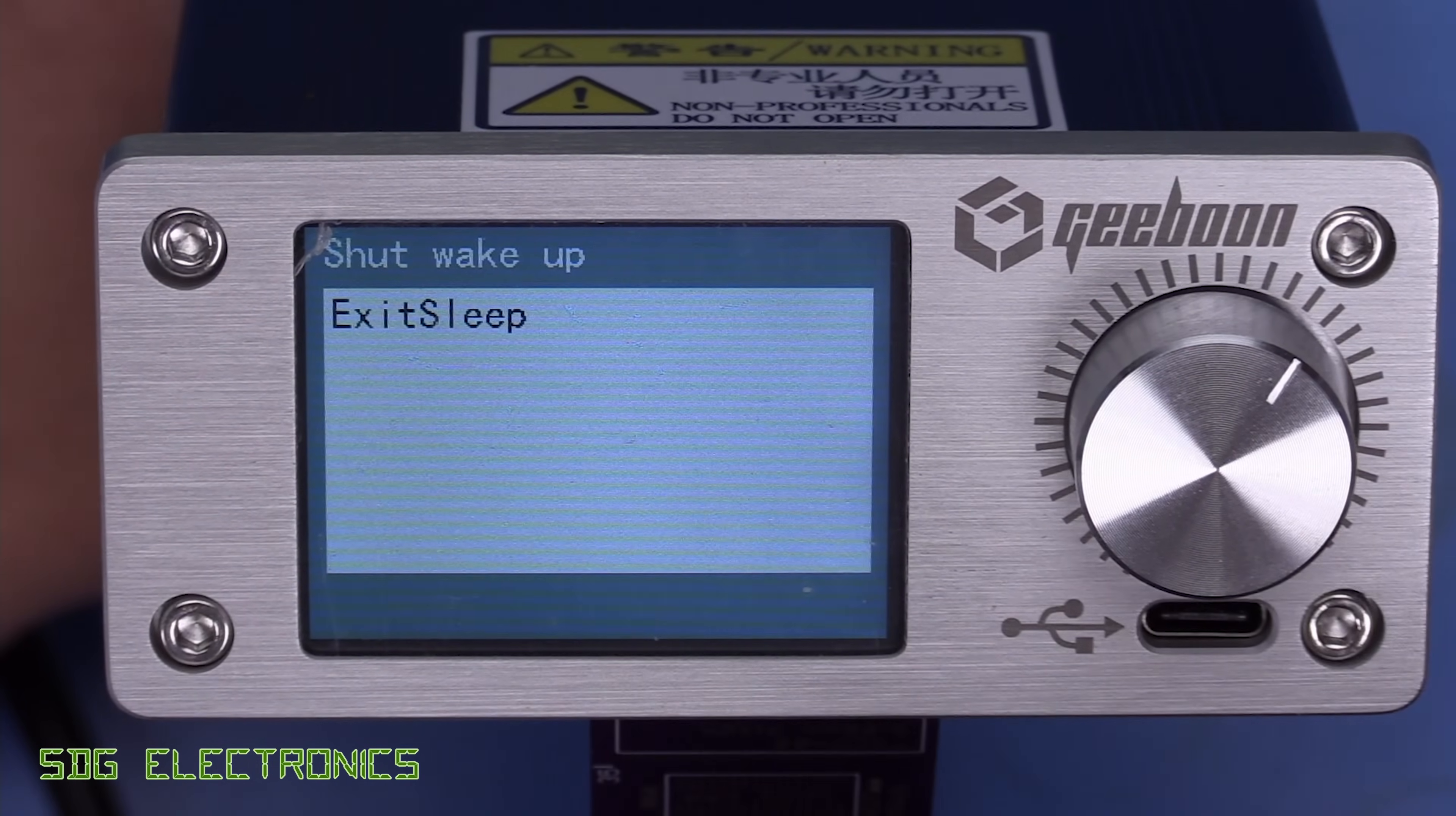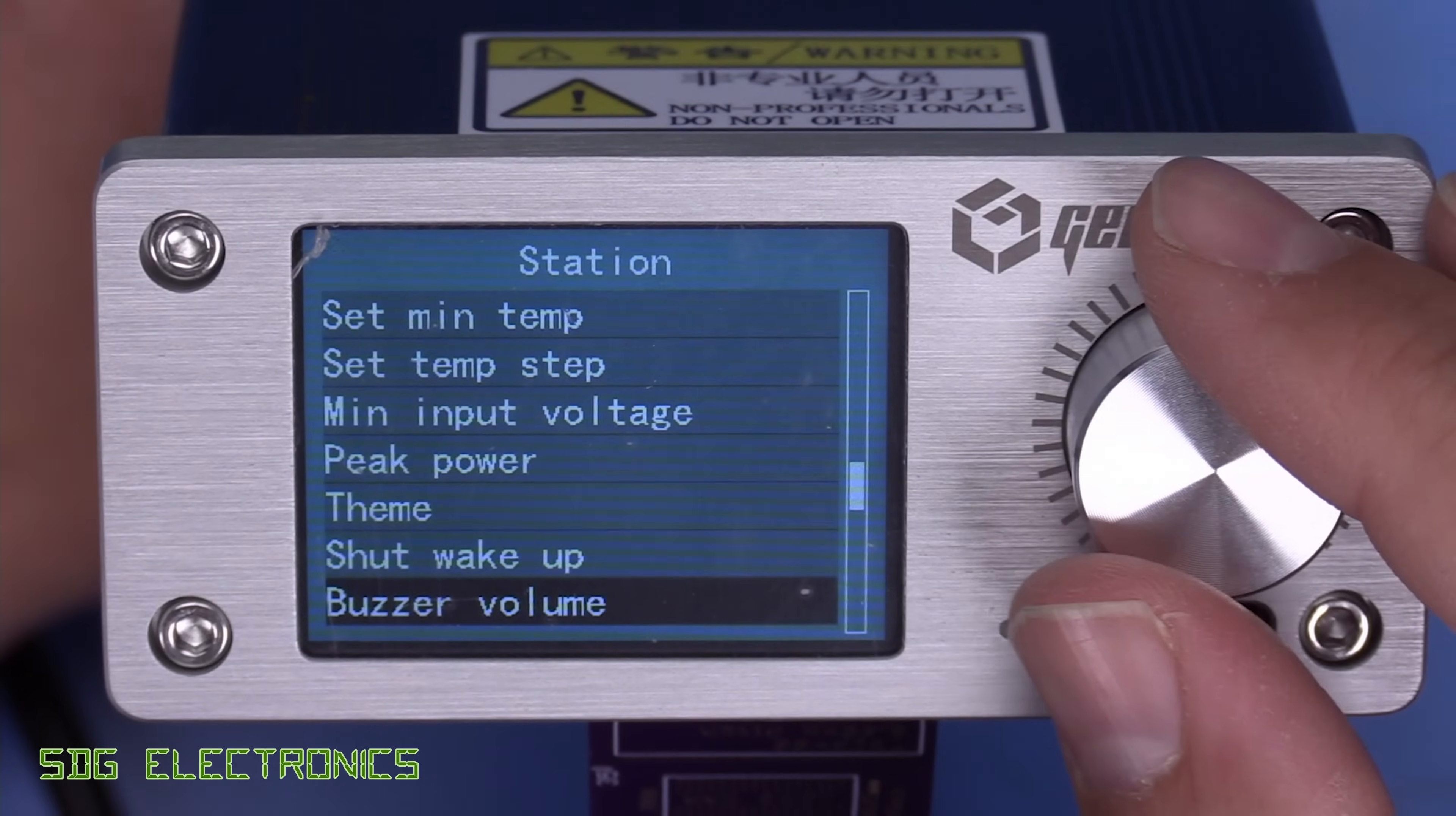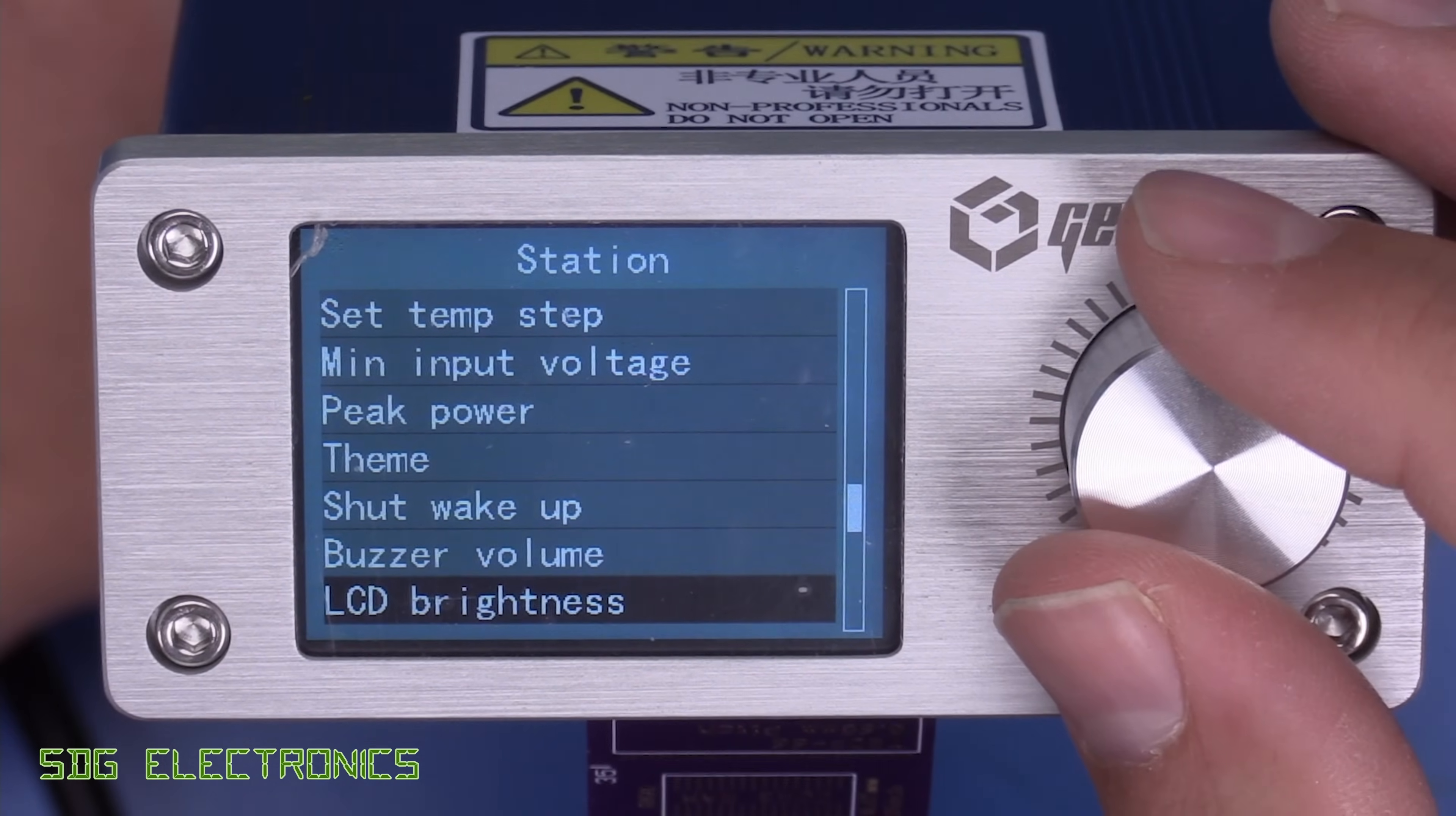I think this is to do with when the handpiece is in the cradle. There is no instruction manual for this. But I think basically, when you take it out of the cradle, it says it will exit the sleep. We've got the buzzer volume. Now it's actually quite unobtrusive. It's not an annoying piezo buzzer. So I'm going to keep this as it is.